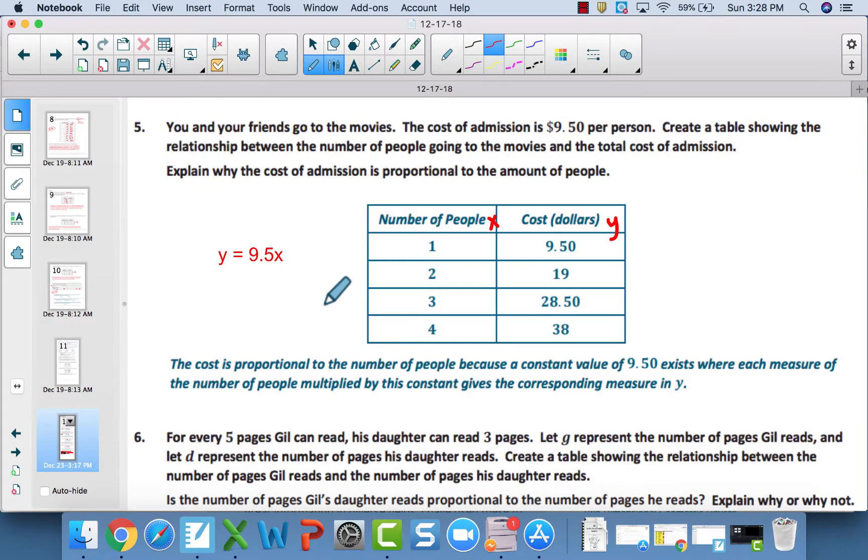Moving down to number 5, this is also proportional. In this case, the constant of proportionality is 950. That is your unit rate, your scale factor. Meaning, you would multiply the number of people times 9 and a half, x being the number of people, to get your cost. The constant of proportionality or your unit rate or your scale factor is $9.50. So you multiply your number of people times 950 to get your y. This is an example of what your table should look like. Make sure you do every part of this question. This question looks small, but it says create a table and then explain. So you should have done both of those things. The equation was extra, but I want you guys to get in the habit of writing the equations.